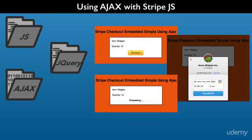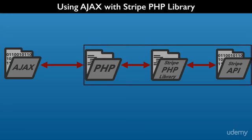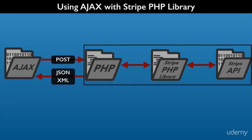For example, displaying a processing message while the charge is completing. With Ajax, we can create our own PHP services that use Stripe independent of our UI. This architecture is the foundation for decoupling the UI and the backend transaction processing. This gives you flexibility on how to send and receive data between the UI and the services that we create.